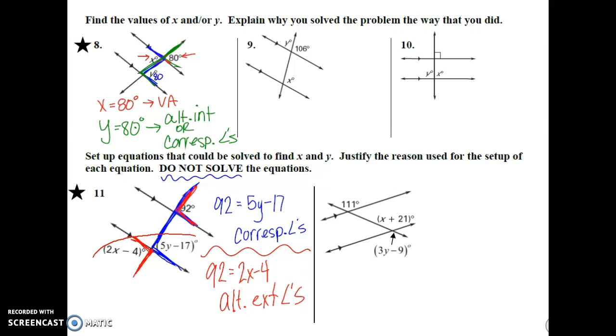You could also use vertical angles right in here. If 92 goes there, then 92 has to go there with vertical angles. Multiple different ways to set them up. But in either case you would always get the same answer.